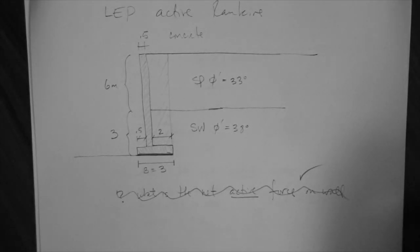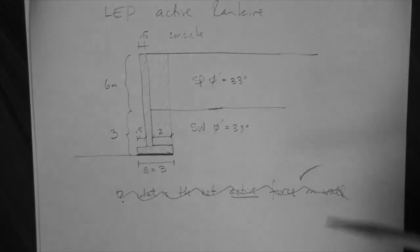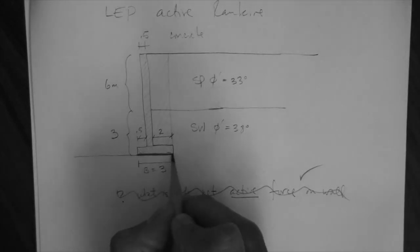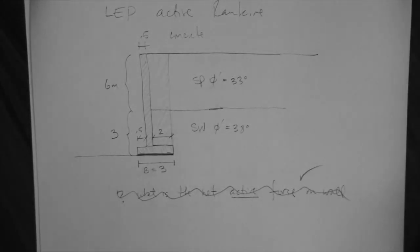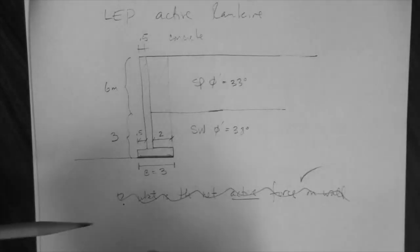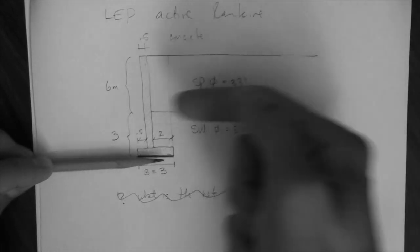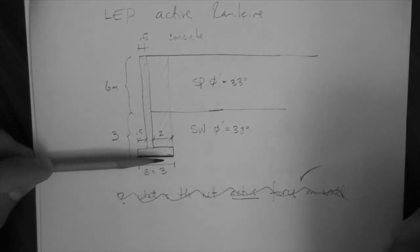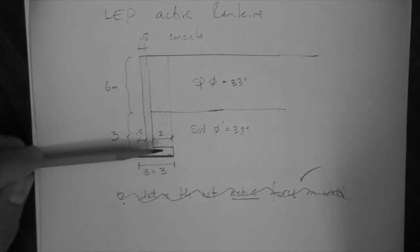So what we need to do then is compare those forces that push laterally, meaning that net force that we calculated, to the sliding resistance in units of force, really force per meter, because the other force, the net active force, is in force per meter of wall, right? So in kilo newton per meter.